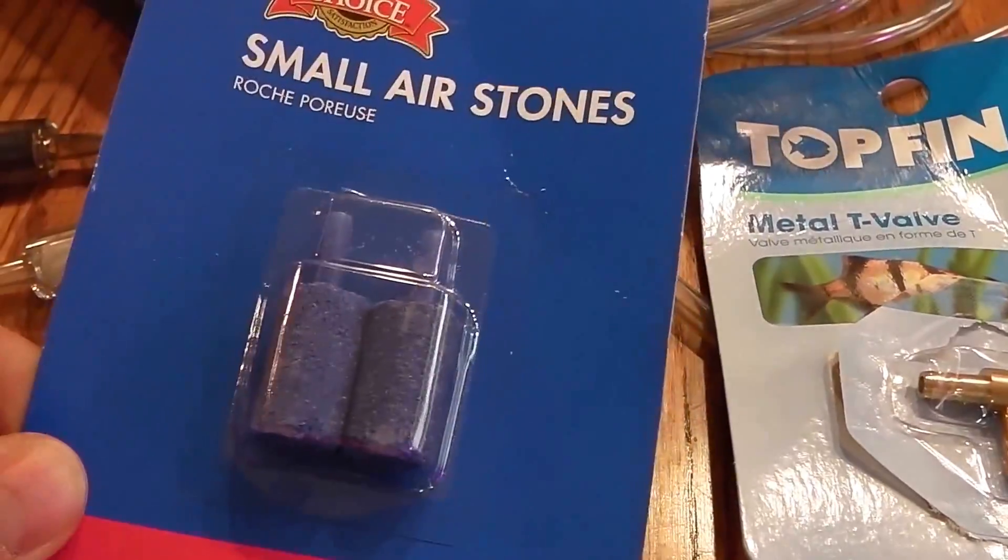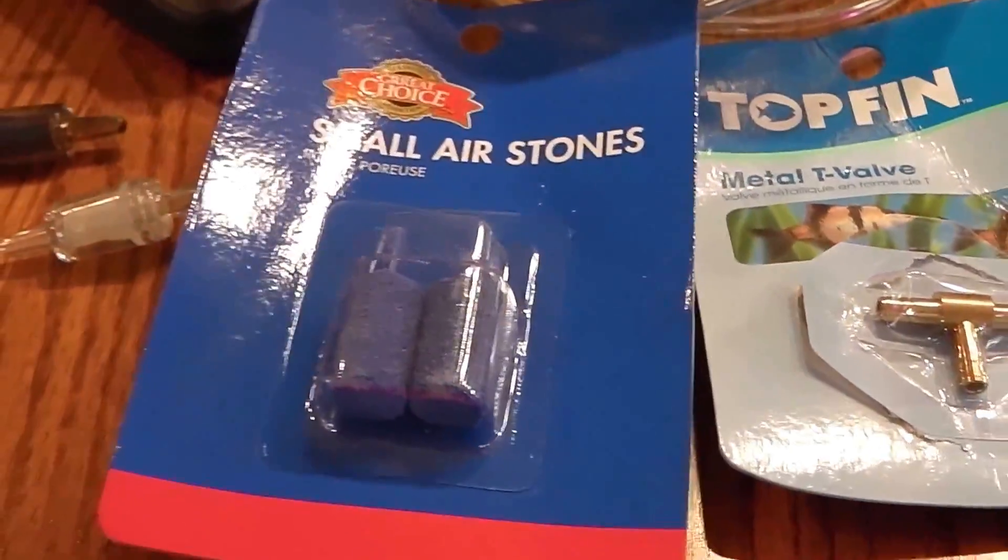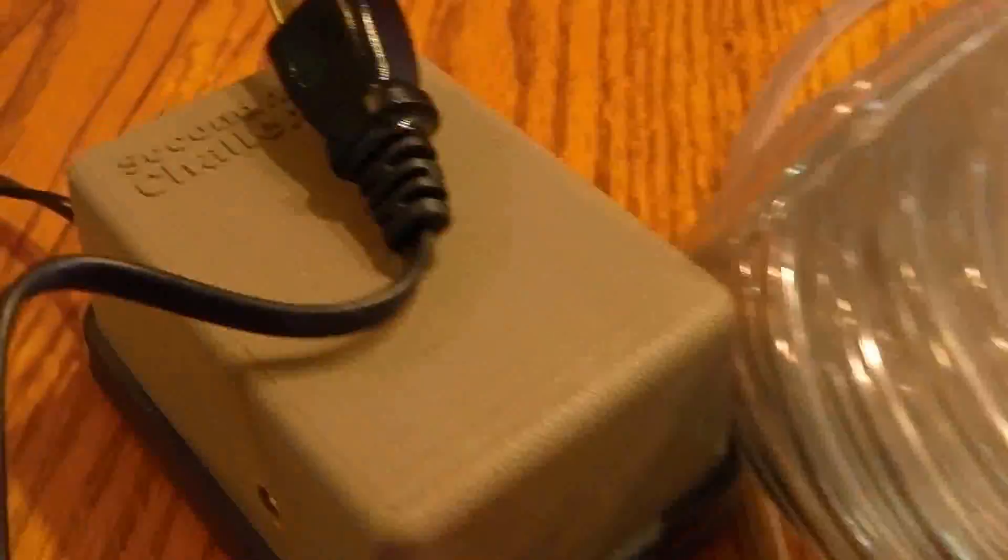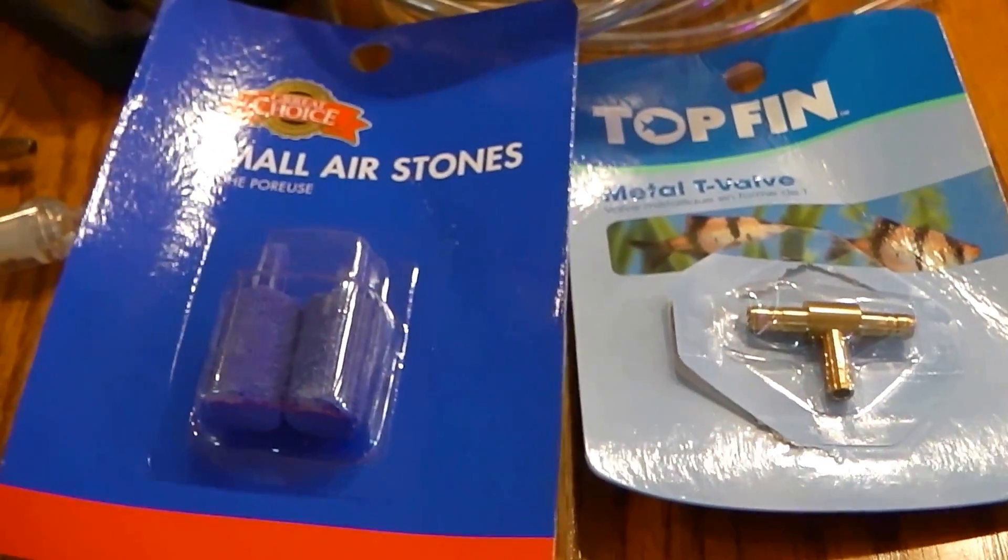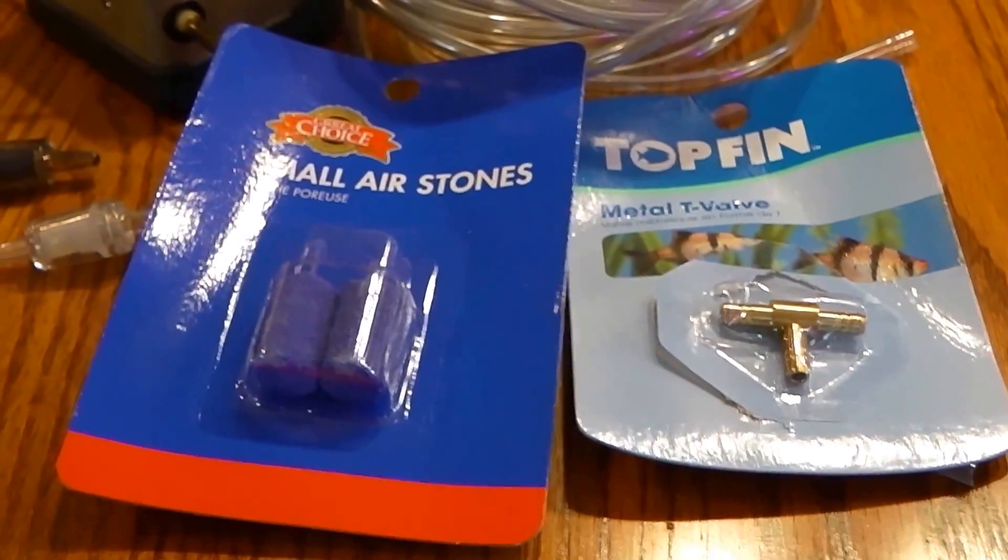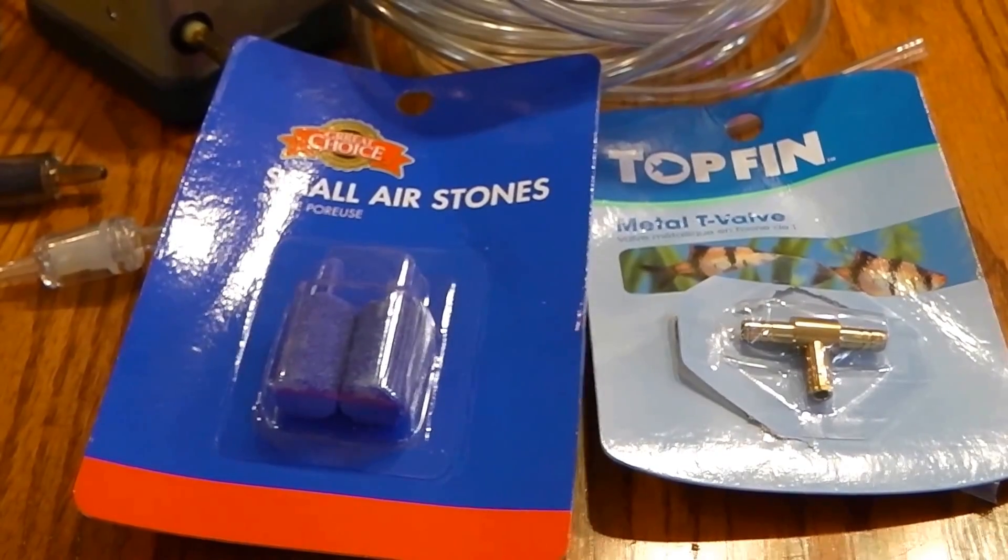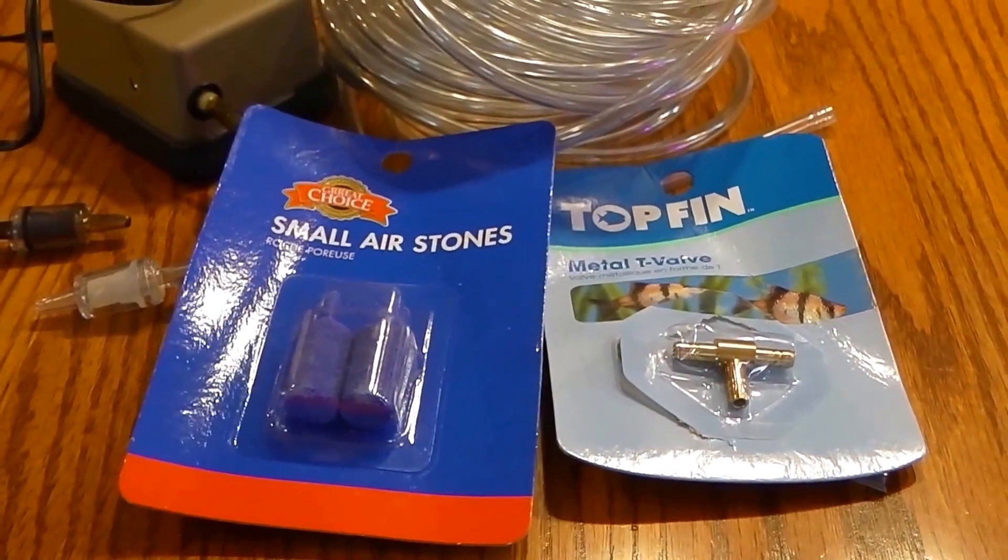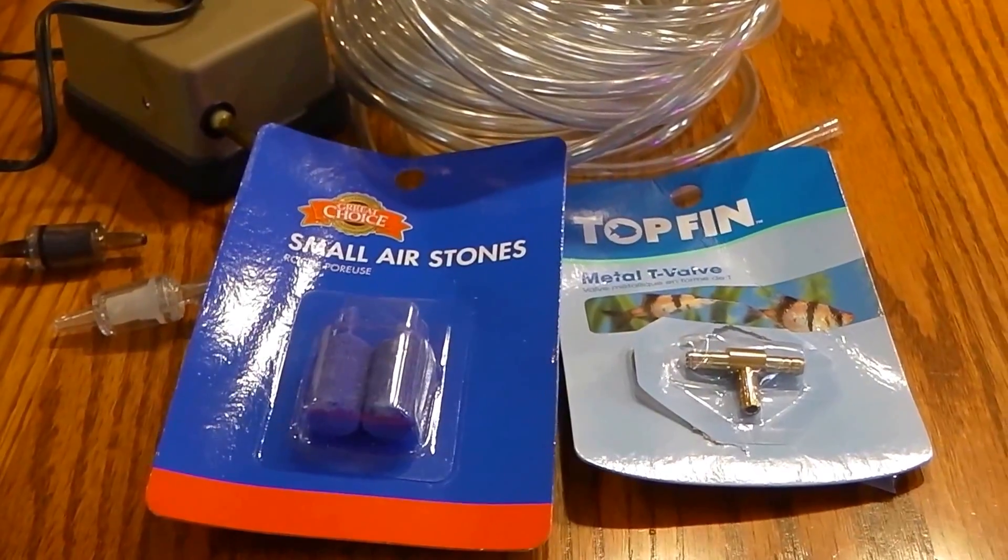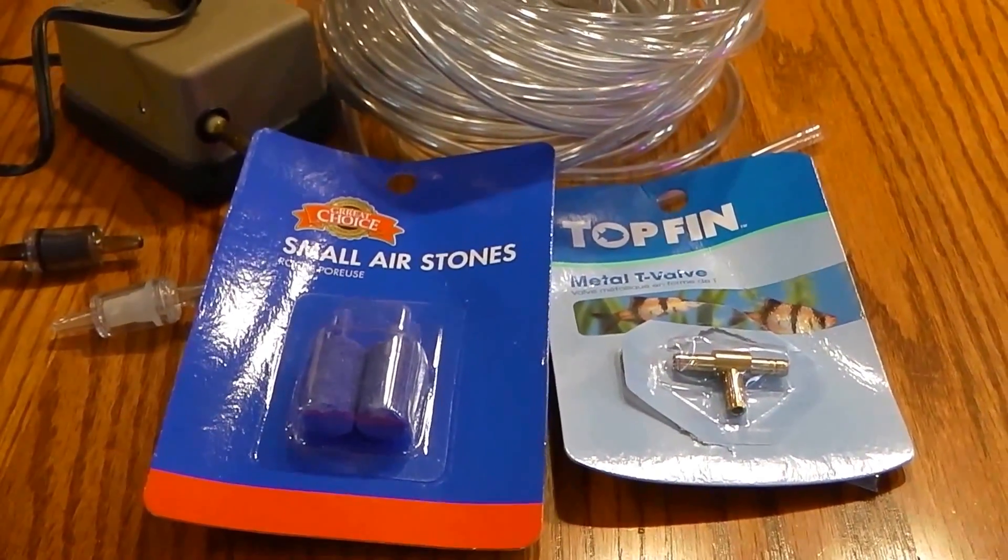So here we have a couple of aquarium air stones. When you hook those up to an air pump and an airline running into your AeroGarden, it'll oxygenate your nutrient solution a lot better and give your roots more oxygen. And you're going to see noticeable better growth when you have a better oxygenated nutrient solution.